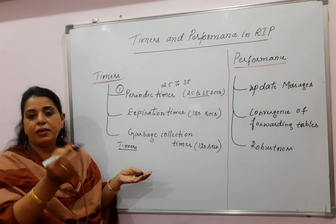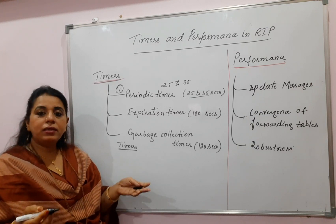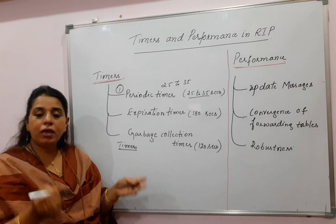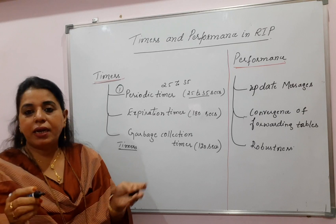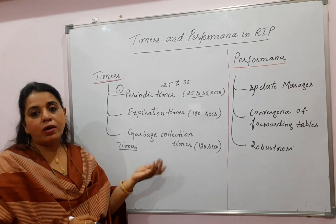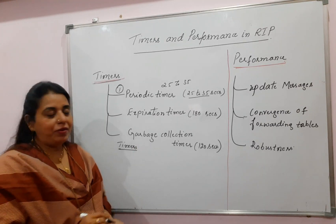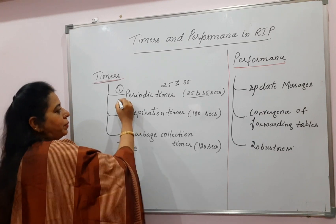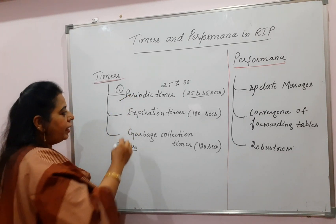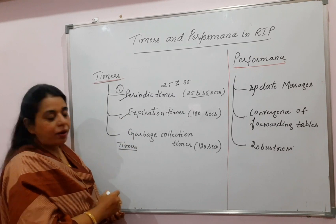The router starts from 35 and when it reaches count zero, it sends its routing information to the neighbor. In this way, all routers will not be sending information at the same time, which will definitely reduce the traffic in the network. This is the purpose of the periodic timer.